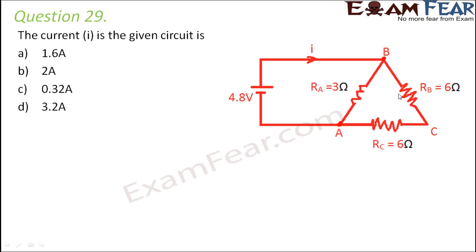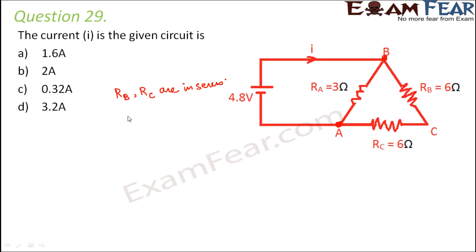Looking at this circuit, R_B and R_C are in series because both of them are connected end to end with respect to points A and B. So R_B and R_C are in series combination. Therefore R series would be equal to R_B plus R_C, which is equal to 12 ohms — 6 plus 6 that is 12.